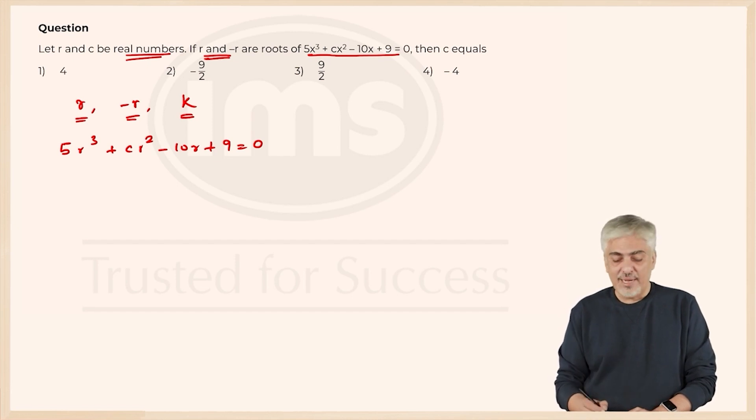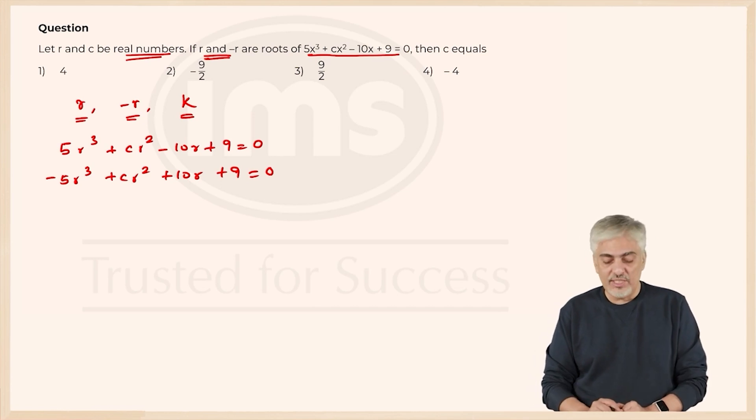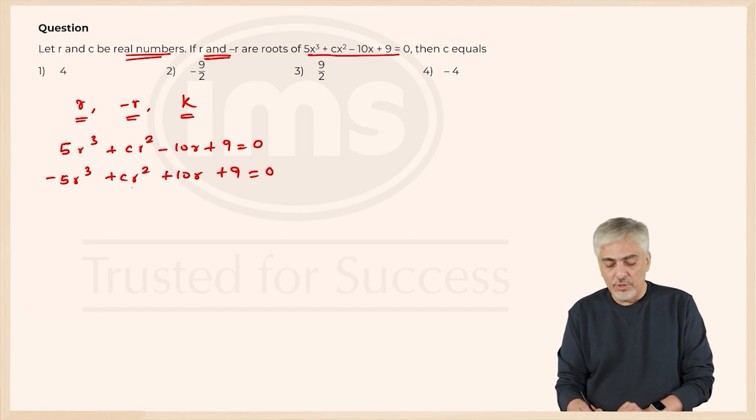Then I put x as minus r, so I got -5r³ + cr² + 10r + 9 = 0. So, we got that if I added these two equations as is, I would have c and r² both which I do not want. I basically wanted to get rid of c and r², so I could find r.